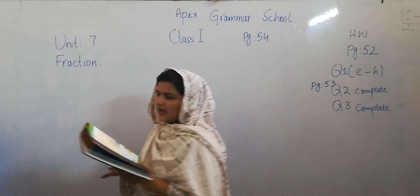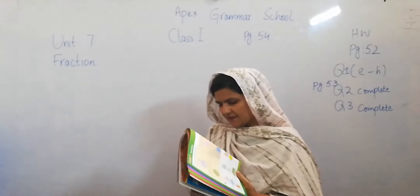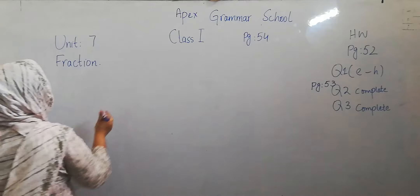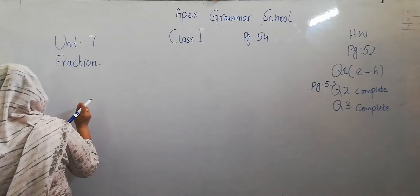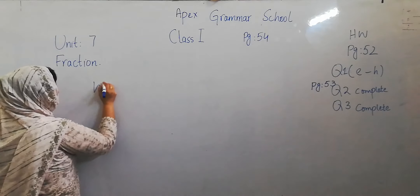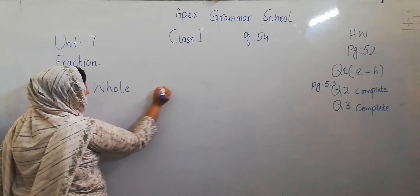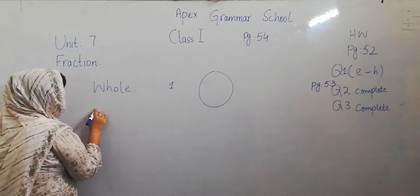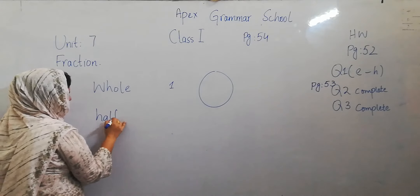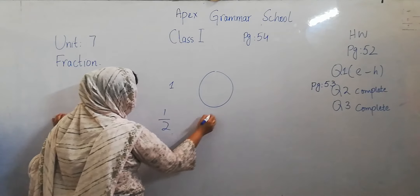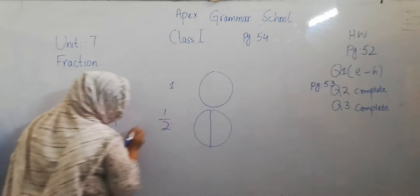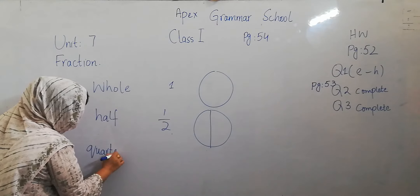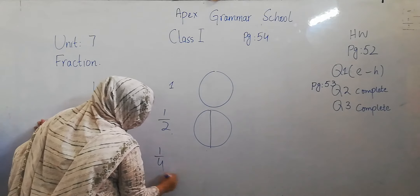Fractions — halves and quarters. First is half and quarter. What is half? First is whole — this is a whole number and a whole shape. Half is written as 1 over 2, which means half. Quarter is written as 1 over 4, which means quarter.